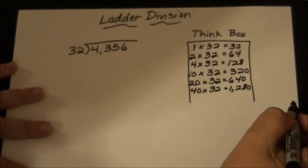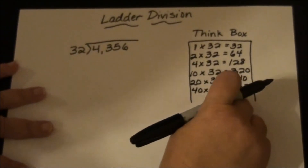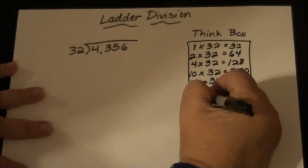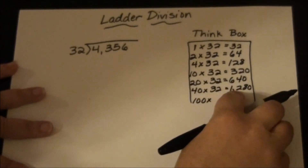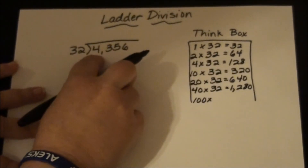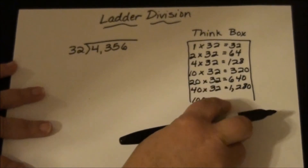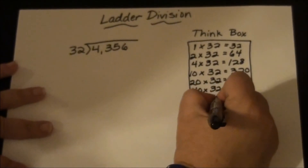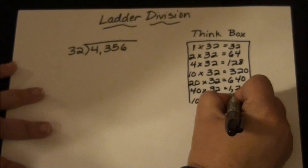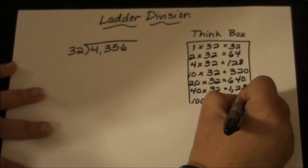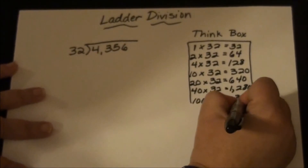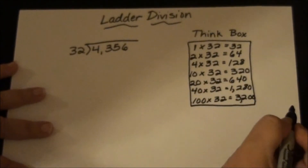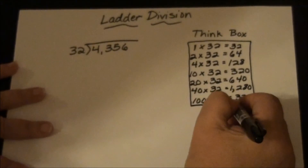1280 is going to be too hard to double again, so I'm going to jump to 100 times 32. I still need a lot more because 1280 is far from 4356, so I need to get a bigger number. That gives me 3200 — a good big number to start with.